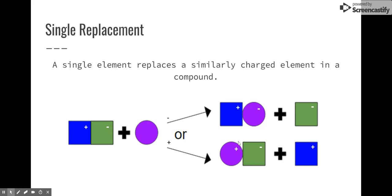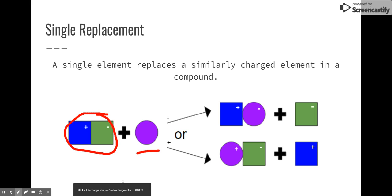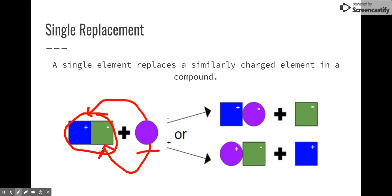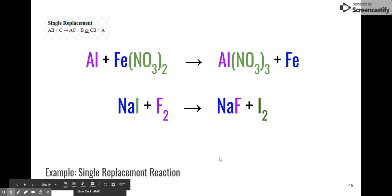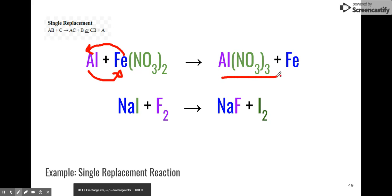Single replacement is our third type of reaction. Think of it like a dance or a partnership — two partners dancing with each other, and then we have a wallflower. That wallflower can choose to go and dance with one of the two partners depending on charge. If it's a negative charge, it's going to go dance with a positive; if it's a positive charge, it goes with a negative. This is simply a single element replacing another element in a different compound. For example, aluminum is our single element and iron nitrate is our compound. Aluminum goes and replaces that iron — it asks nitrate for a dance, and iron becomes the new wallflower.